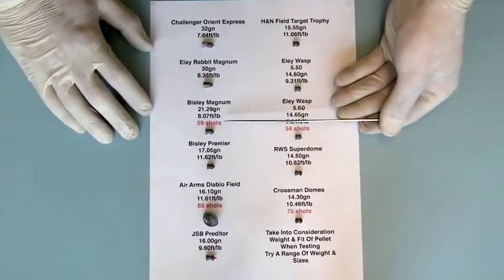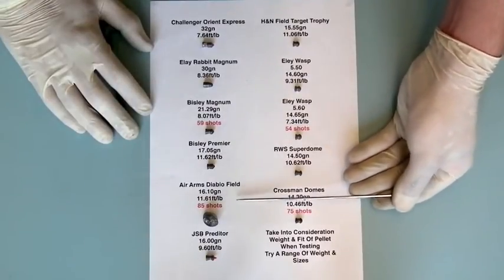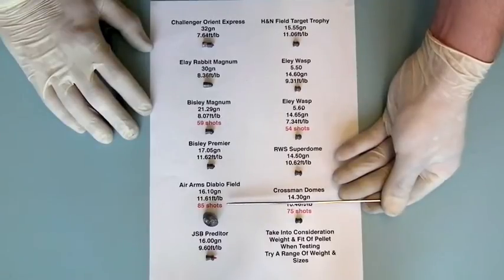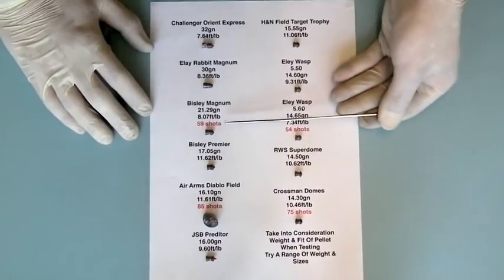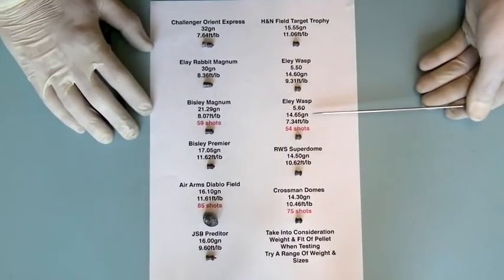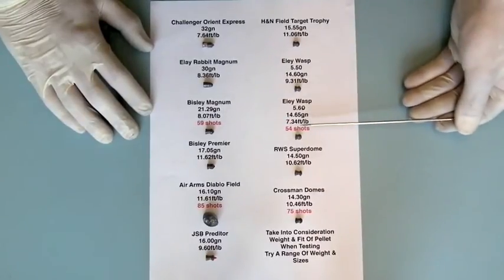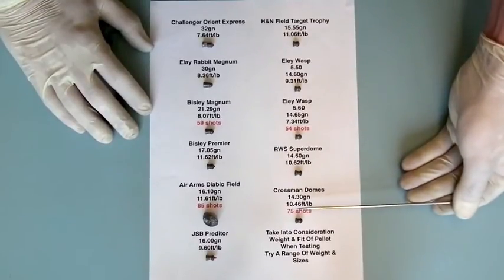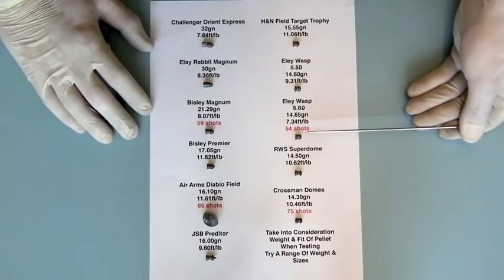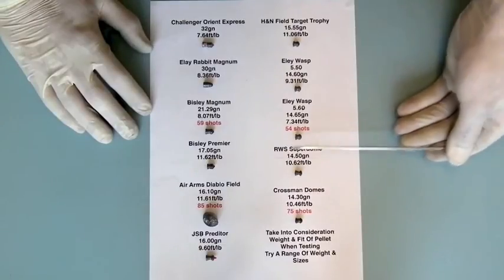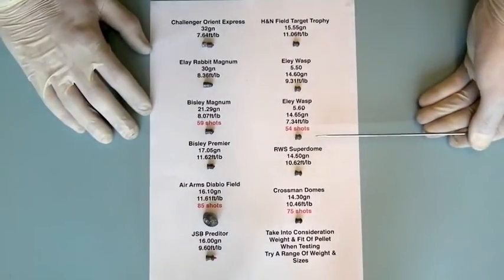Let's have a quick look at the number of shots. With the Air Arms Diablo Field, we were getting about 85 shots—that's not 85 regulated shots, that's 85 good usable shots. So the regulator was stopping working at about 76-ish, but then there's slow drop off. We then did the same tests using the Bisley Magnum, the Ely Wasp, and the Crossman Domes or Crossman Acupel, as we know them as. As you can see, there is a considerable difference between one and the other—that's 54, 64, 74, 84—that's about one and a half times difference between one and the other.